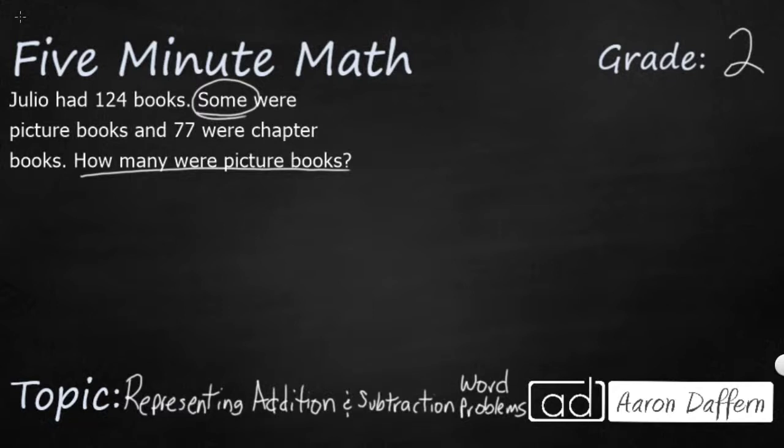So let's see if we can figure out how we can represent this in an addition sentence and maybe with some pictures and solve the answer. So Julio had 124 books. I'm going to put that. That's my total. And he knows that 77 are chapter books and the rest are picture books. I'm just going to put this box.